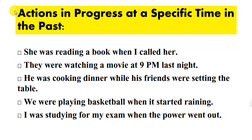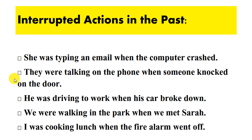The past progressive tense is used to express actions in progress at a specific time in the past. For example: 'She was reading a book when I called her.' 'They were watching a movie at 9 p.m. last night.' 'He was cooking dinner while his friends were setting the table.'